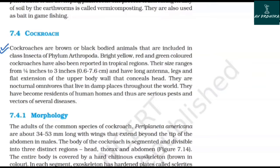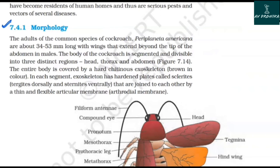7.4.1 Morphology. The adults of the common species Periplaneta americana are about 34 to 53 mm long, with wings extending beyond the tip of the abdomen in males. The body is segmented and divisible into three distinct regions: head, thorax, and abdomen. The entire body is covered by a hard chitinous exoskeleton, brown in color. In each segment, the exoskeleton has hardened plates called sclerites — tergites dorsally and sternites ventrally — joined to each other by a thin, flexible articular membrane known as the arthrodial membrane.